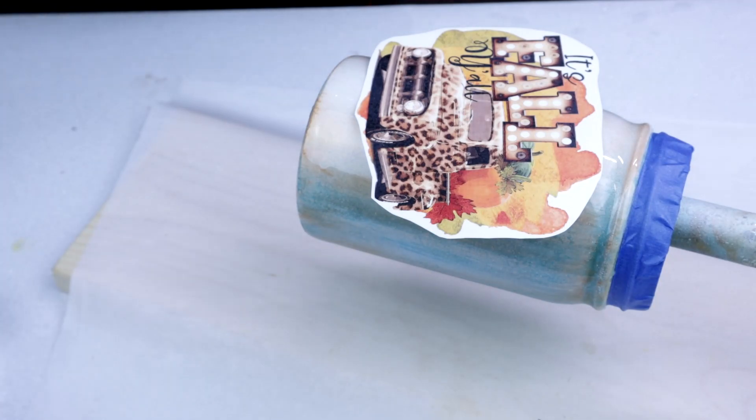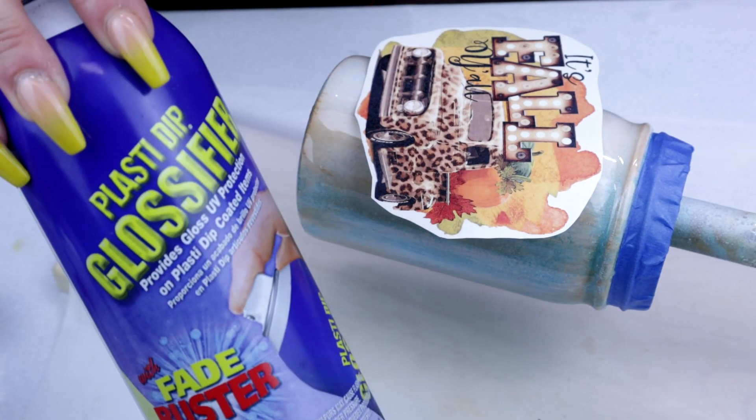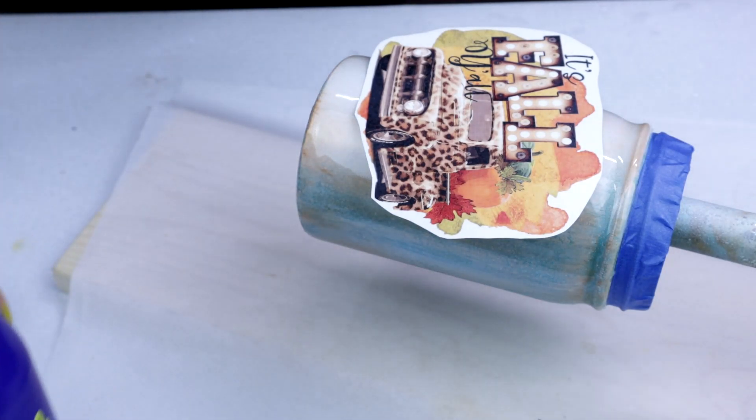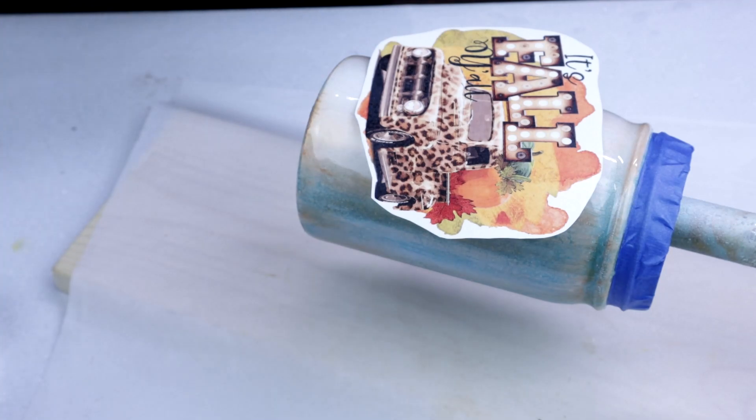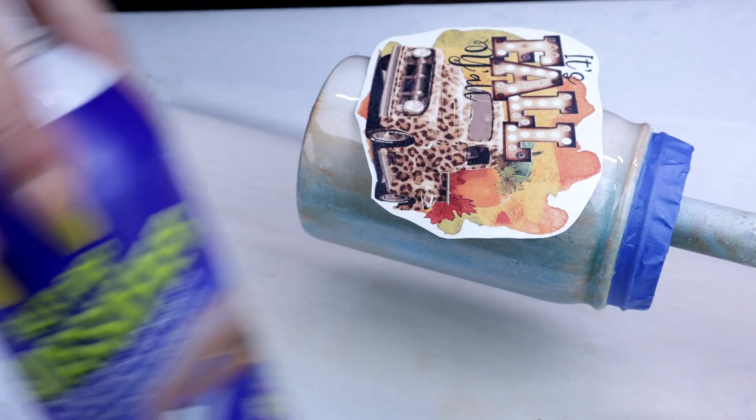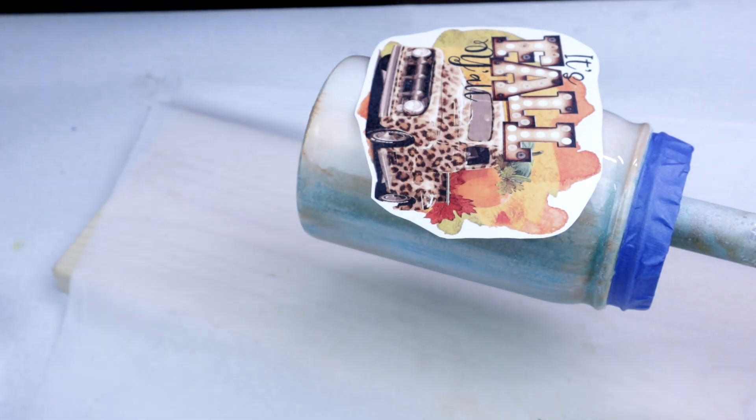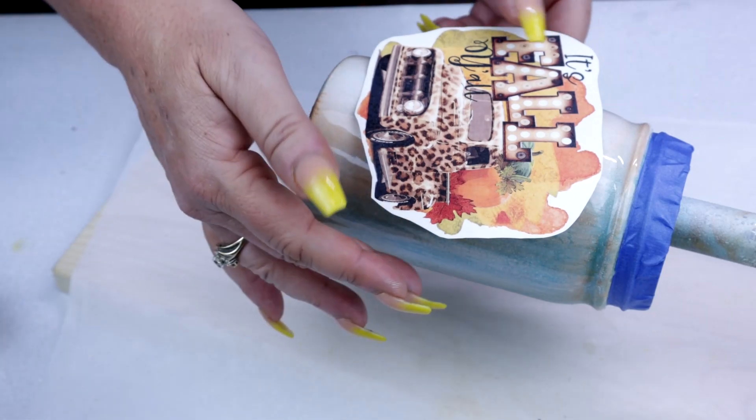A lot of people are having issues with the glossifier allowing the epoxy to adhere to the water slide. So I just did two sprays of the matte clear and then one of the glossifier. Let's see how it works. Now I've already got my water off to the side and we're ready to apply it to the tumbler.